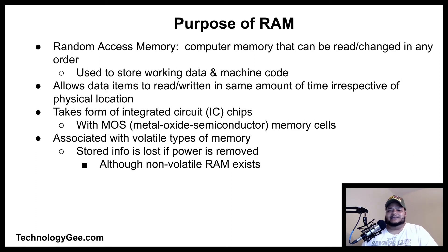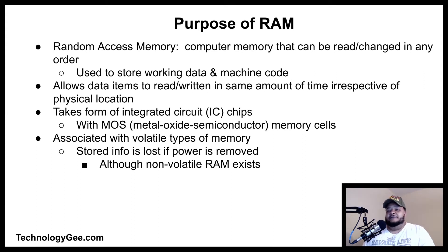Let's talk about the purpose of RAM. Random access memory is a form of computer memory that can be read and changed in any order, typically used to store working data and machine code. RAM allows data items to be read or written in almost the same amount of time irrespective of the physical location of data inside the memory.